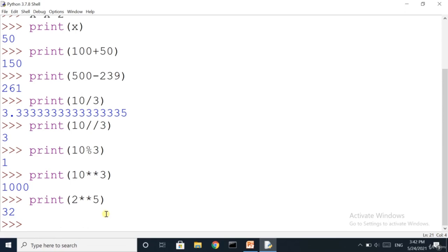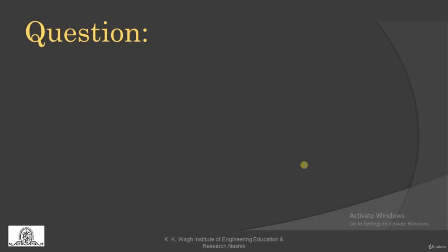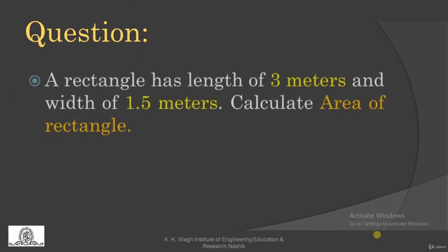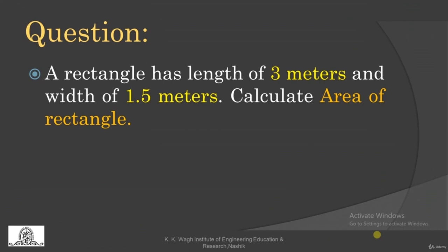Now let us solve a few examples. A rectangle has a length of 3 meters and width of 1.5 meters — calculate the area of the rectangle. You are going to give meaningful names to the variables and calculate the area. It should also be printed so it can be verified. Pause this video and try by yourself. Get the happiness of a successful output. All the best.